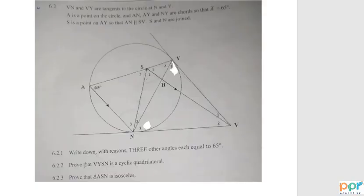This is the beginning of the problem. The first one is VN and VY, I mean NV, are tangent to the circle at N and Y. If we are tangent to the circle, we are going to be the other one.